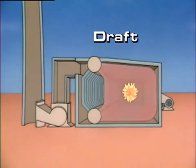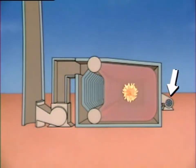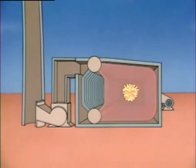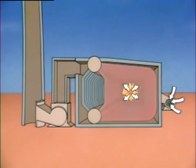The components typically used to provide draft are fans. There are two basic categories of draft fans: forced draft fans and induced draft fans. As their name implies, forced draft fans force air into the boiler. A forced draft fan draws air from outside the boiler and forces it through the burner into the combustion area.